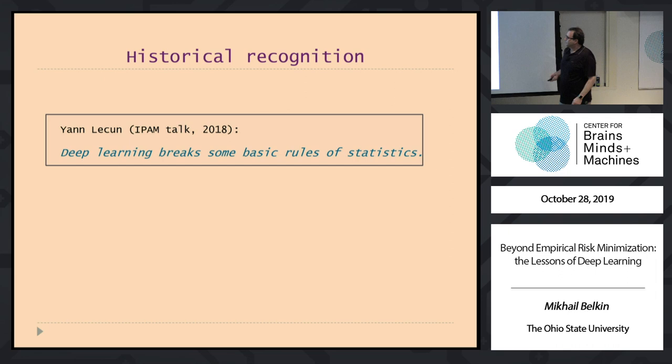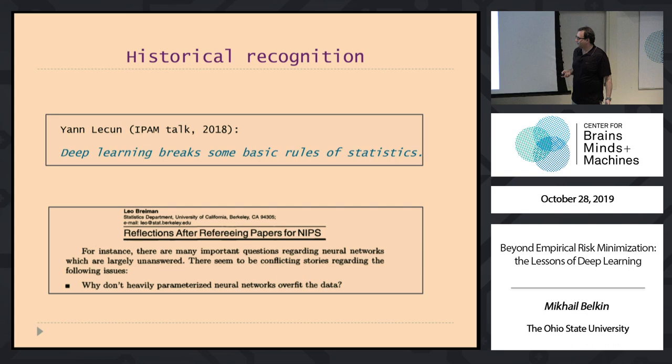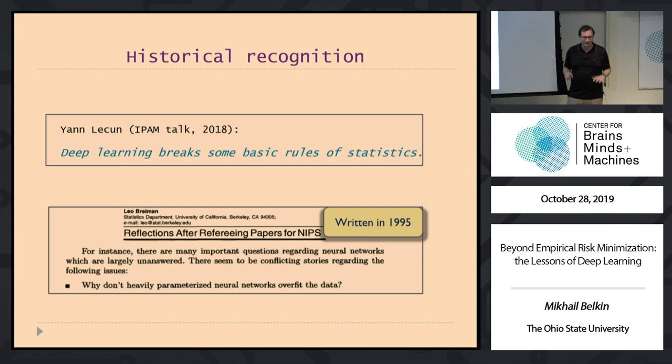There has been recognition of this fact. Yann LeCun said on several occasions that deep learning breaks rules of statistics. And it goes much further back — Leo Breiman had a note titled 'Reflections after refereeing papers for NIPS,' where the first question is: why don't heavily parameterized neural networks overfit the data? This is from 1995 — 24 years ago. I think now we have at least some answers.